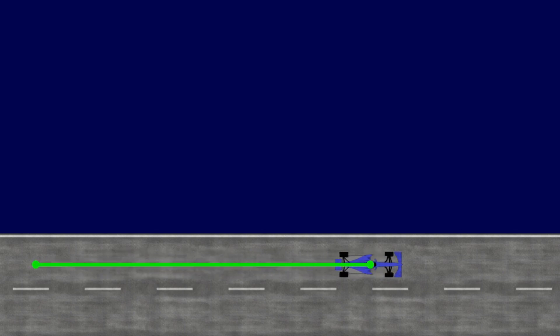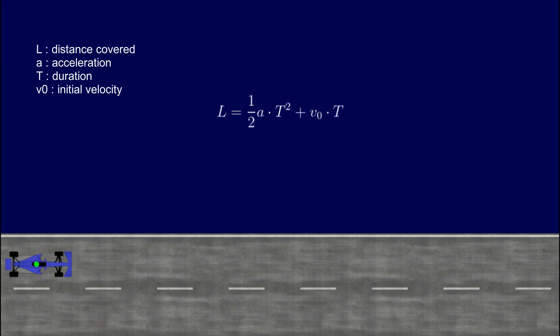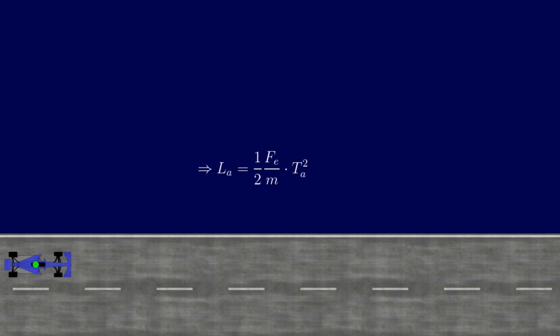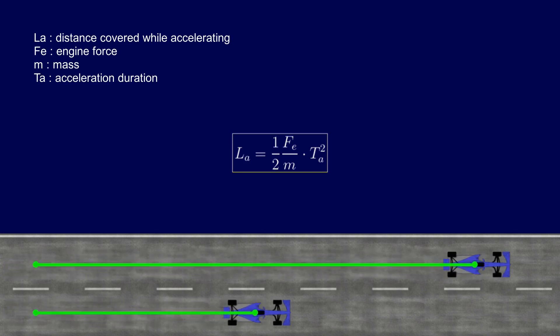Now, we would like to know the distance L traveled by an object that accelerates. It can be easily proven that this distance is proportional to the acceleration and is expressed as the square of the elapsed time. Let's express this distance L in the case of a car accelerating with an initial velocity of zero. Our goal here is to include the mass in the formula. The acceleration can be obtained using Newton's second law, as seen earlier. Moreover, the initial velocity is zero in this case. This allows us to simplify the formula. So, we know that in a given time, the more massive of our two cars covers half the distance traveled by the first one. Indeed, no matter the elapsed time, the distance traveled depends on the inverse of the mass. Here, we denote by Fe the force of the engine.